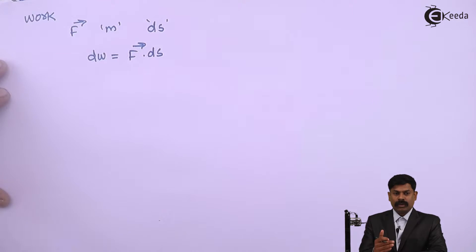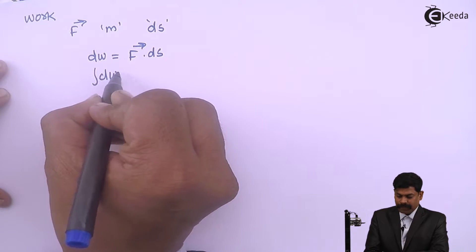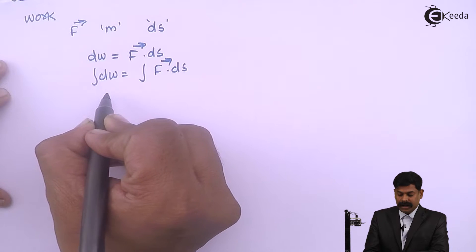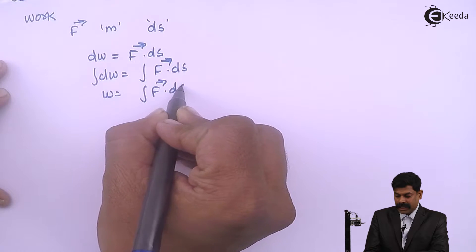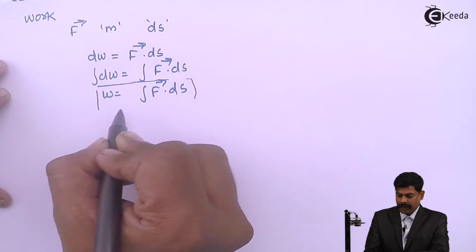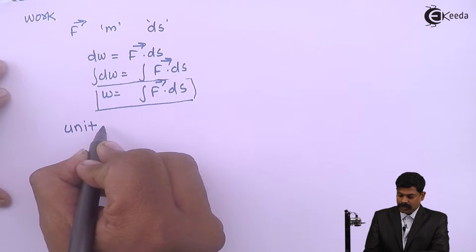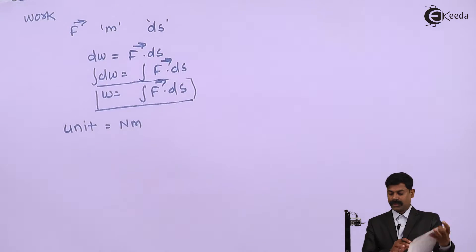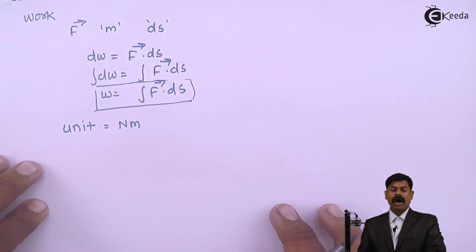So if you calculate a finite work done, you have to integrate this: integration of dW equals integration of F into ds. So W equals integration of F ds is called work done. The unit of work done is Newton-meter, where ds is the small displacement of the body in the direction of the applied force.